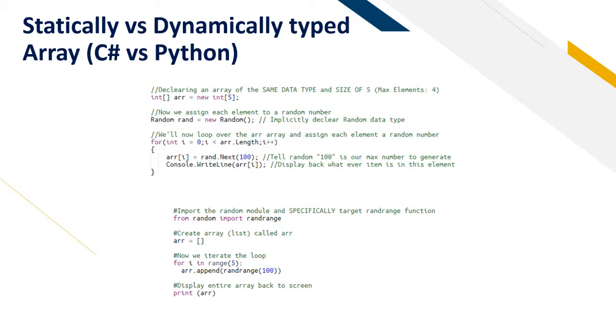The code from below is from Python. We're going to import the random module and specifically target the random range function, so that we don't include all functions that we don't need. Then we create an array, it should be a list, and we call it arr, short for array. Then we iterate from a range of 5, so that would be 0 to 4, and we use the random range function to create a number between 0 to 100 maximum, and then we can display the array in its entirety.